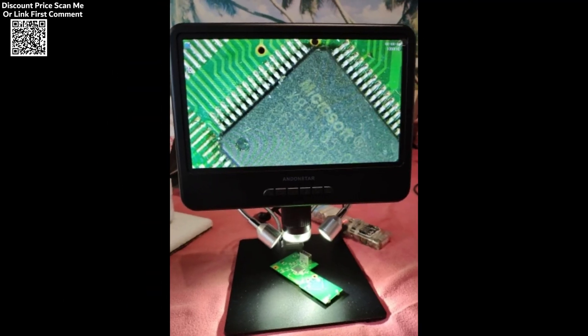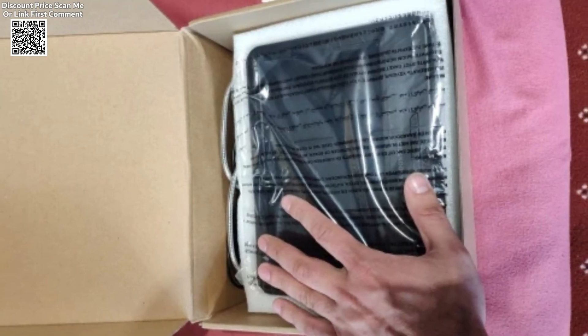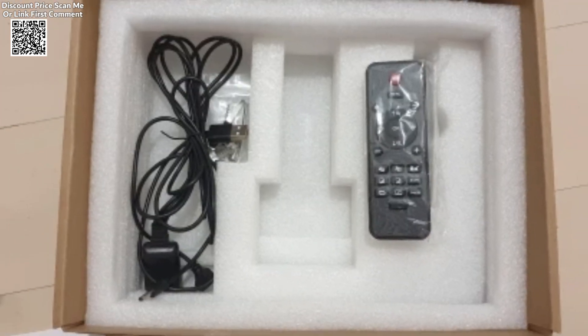The metal stand included with the microscope provides stability during use, preventing any wobbling or movement that might interfere with precision work. The package also includes metal clips and a user manual, ensuring that users have all the tools they need to get started right away. The microscope is also equipped with multilingual support.